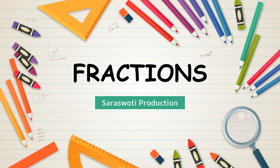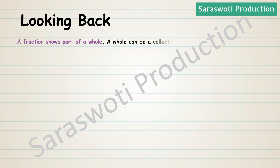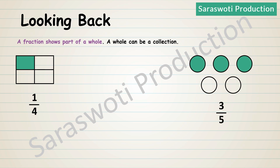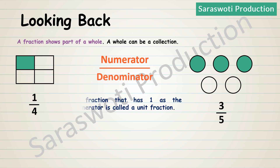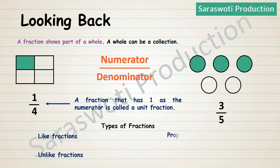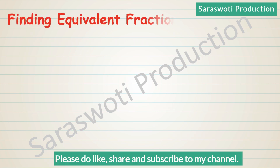Hello students, today we're going to learn about fractions. A fraction shows a part of a whole. A whole can be a collection. For example, 1/4 and 3/5. Here we have numerator divided by denominator. A fraction that has one as a numerator is called a unit fraction. You're familiar with the following types of fractions: like fraction, unlike fraction, proper fraction, and improper fraction.